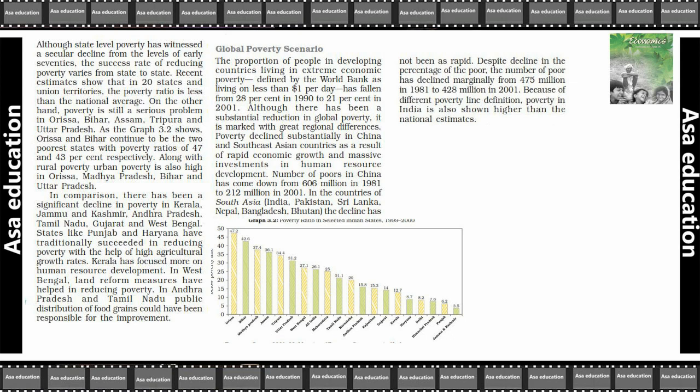On the other hand, poverty is still a serious problem in Orissa, Bihar, Assam, Tripura and Uttar Pradesh. As Graph 3.2 shows, Orissa and Bihar continue to be the two poorest states with poverty ratios of 47% and 43% respectively.